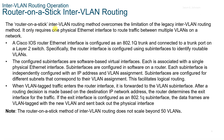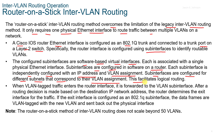The Router on a Stick VLAN Routing method overcomes the limitation of Legacy VLAN Routing. It only requires one physical Ethernet interface to route traffic between multiple VLANs. A Cisco IOS Router Ethernet interface is configured as an 802.1Q trunk and connected to a trunk port on a Layer 2 switch. The router interface is configured using sub-interfaces to identify routable VLANs. These sub-interfaces are software-based virtual interfaces, each associated with a single physical Ethernet interface, and each is independently configured with an IP address and a VLAN assignment corresponding to its subnet.